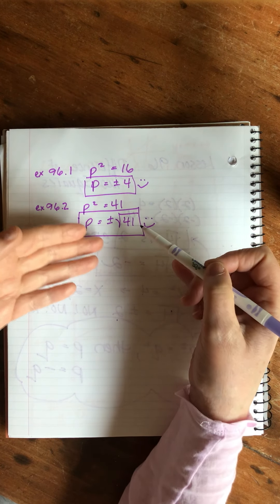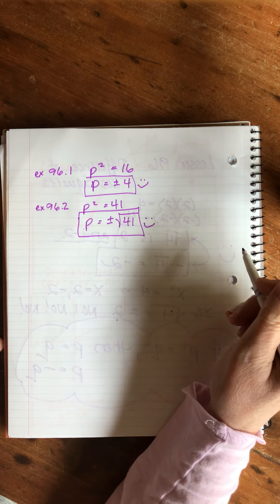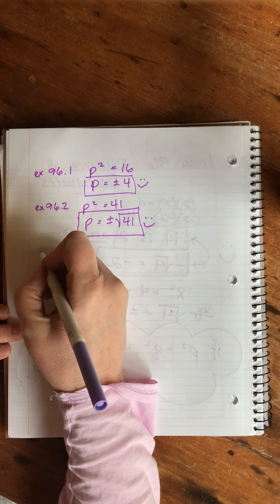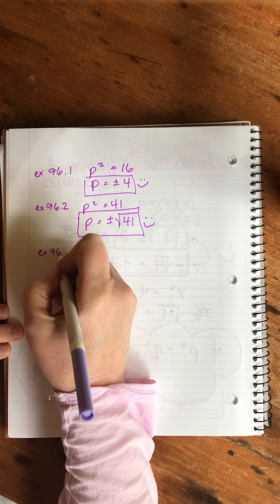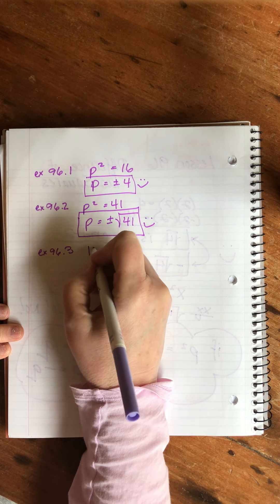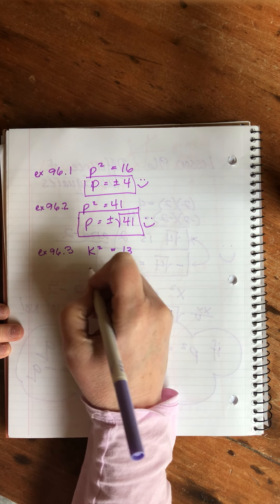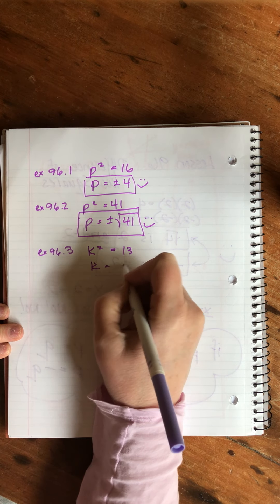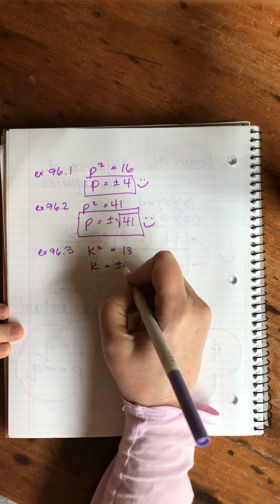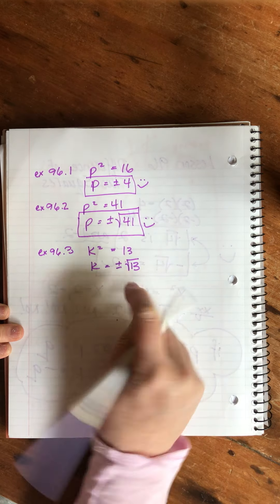Here's the last one: k squared equals 13. We take the square root of both sides. K equals plus or minus square root of 13.